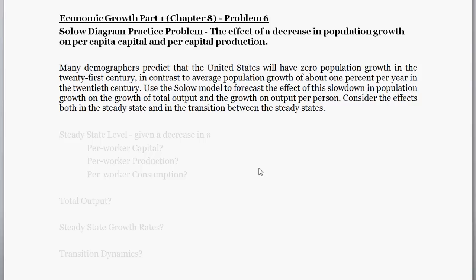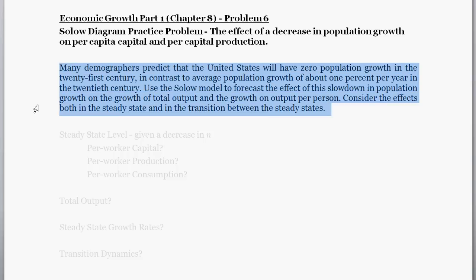Hello and welcome. With this question we're working with a Solow growth model, focusing on applications of the diagram. We're going to see the effect of a change in population growth rates on key variables in the model. The question asks: many demographers predict that the United States will have zero population growth in the 21st century, in contrast to average population growth of about 1% per year in the 20th century. Use the Solow model to forecast the effects of this slowdown on growth of total output, growth of output per person, and effects on both the steady states and the transitions between steady states.